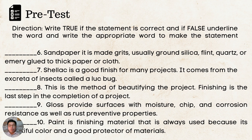6. Sandpaper is made of grits, usually brown silica, flint, quartz, or emery glued to thick paper or cloth. 7. Shellac is a good finish for many projects; it comes from the excreta of insects called a lac bug. 8. Finishing is the last step in the completion of a project. 9. Gloss provides surfaces with moisture, chip, and corrosion resistance, as well as rust preventive properties. 10. Paint is a finishing material that is always used because of its beautiful color and it is a good protector of materials.